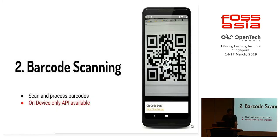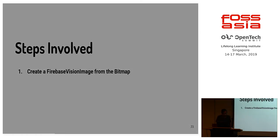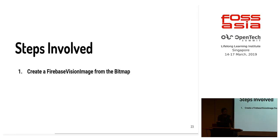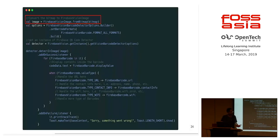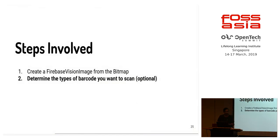Next up is barcode scanning. This allows you to scan and process barcodes. This is part of Google's Vision API and has only an on-device API available — it runs barcode processing on your device and doesn't require internet connectivity. There's an example app on the right side — I scanned a QR code and it showed me the data of that QR code. There's an optional step available in the barcode scanner API: you can determine what types of barcodes you want to scan.